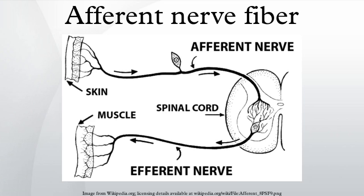Another mnemonic device used for remembering afferent and efferent is SAME-DAVE: Sensory-Afferent, Motor-Efferent, Dorsal-Afferent, Ventral-Efferent. Afferent and efferent are also connected to affect and effect through their common Latin roots. Afferent nerves affect the subject, whereas efferent nerves allow the subject to effect change.